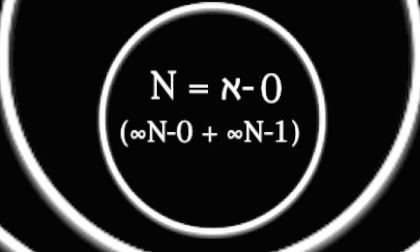The number set {0, 1, 2, ...} up to infinity, equaling N sub 0, is equal to the same cardinal sum as the number set {1, 2, 3, ...} up to infinity, equaling N sub 1, because 0 is the empty set and thus adds no measured value.